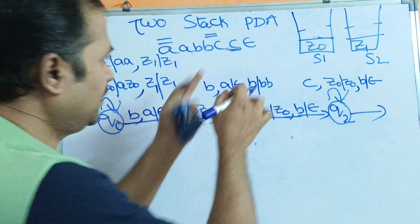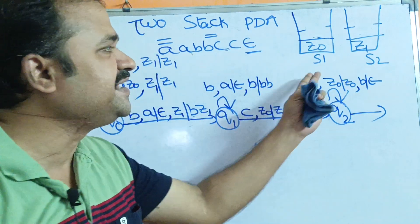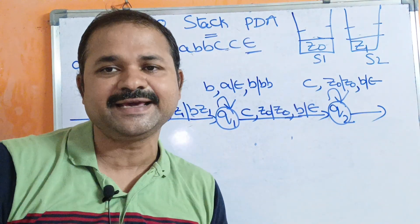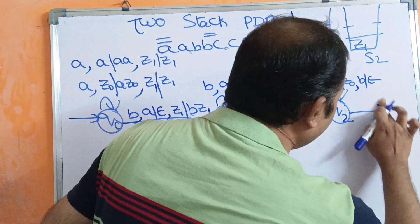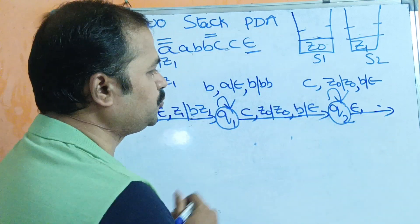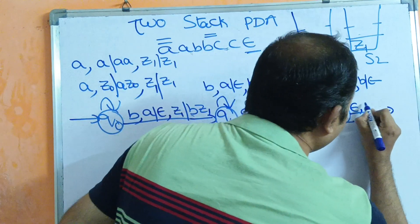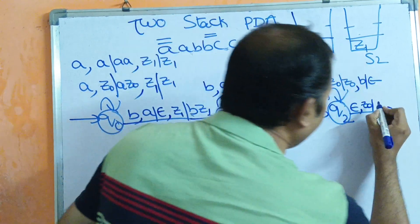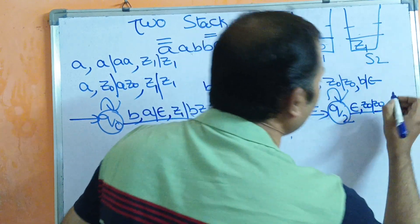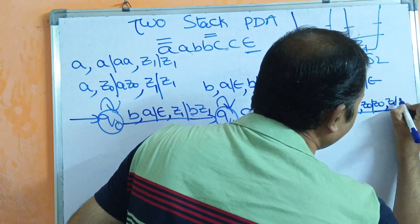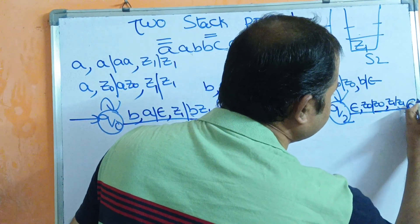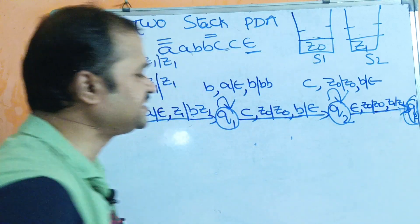After all characters are processed, the next symbol is epsilon. Stack 1 is empty and stack 2 is empty. On Q2, reading epsilon, no operation is performed on either stack — keep Z0 and Z1 as they are. We then move from Q2 to the final state QF.